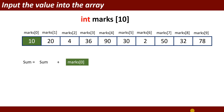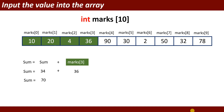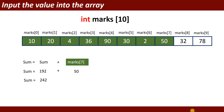Now I want to calculate the sum. Sum equals the sum of elements of the array: sum = sum + marks[0]. By default, the sum variable starts at 0. Adding: 0 + 10 = 10, plus 20 = 30, plus 4 = 34, plus 36 = 70, plus 90 = 160, plus 30 = 190, plus 2 = 192, plus 50 = 242, plus 32 = 274, plus 78 = 352. Sum is 352.